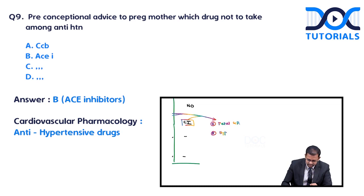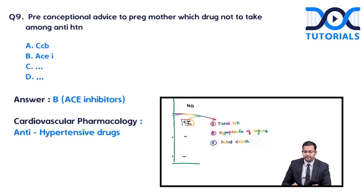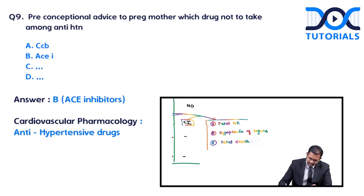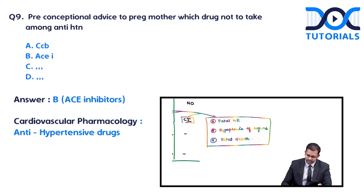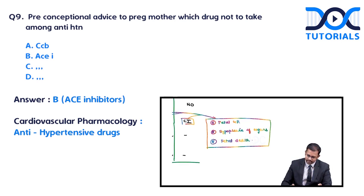Certain drugs are contraindicated in pregnancy. The teratogenicity expected includes fetal growth retardation, hypoplasia of organs, and fetal death. These drugs may also cause renal damage in the fetus — which is why they are contraindicated in pregnancy.